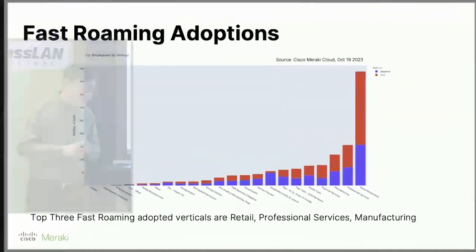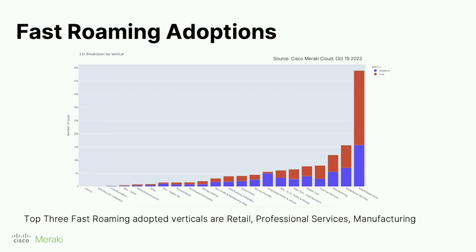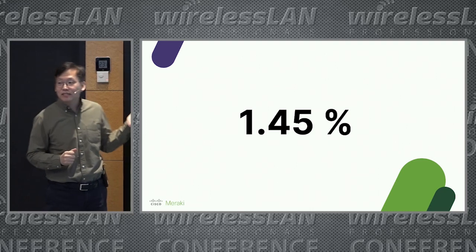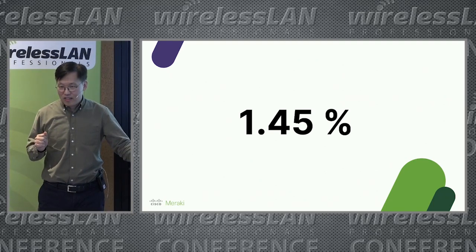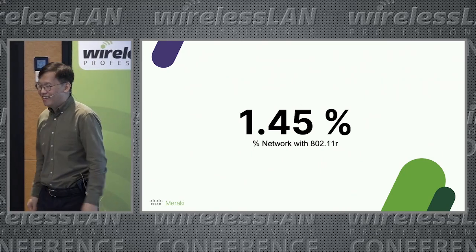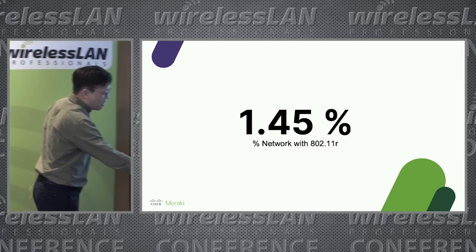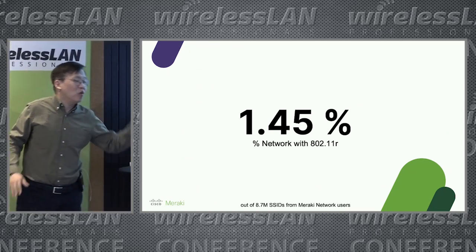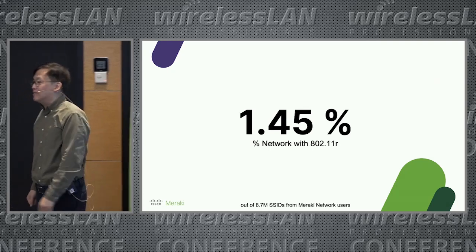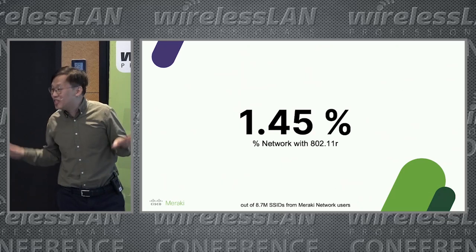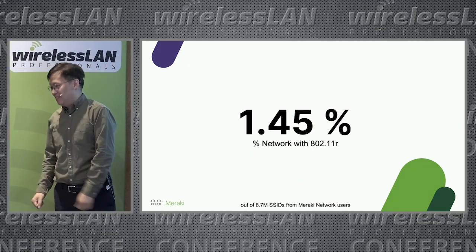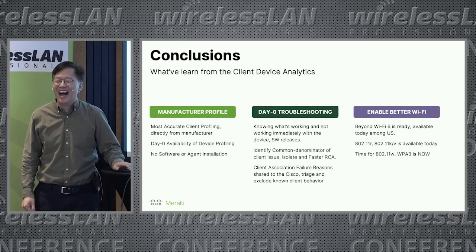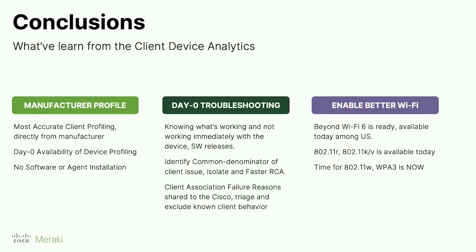This is fast roaming adoption data. The top three verticals are retail, professional services, and manufacturing. Anyone want to guess what this number means? This is the percentage of networks that have 802.11r enabled. In Meraki, we have 8.7 million networks, and less than 200,000 have 802.11r enabled. You can see how much this community can contribute — you can change things by enabling 802.11r on your network. It will work — I'll give you my name and my phone number.